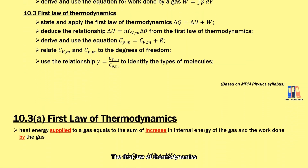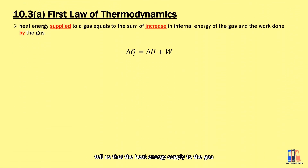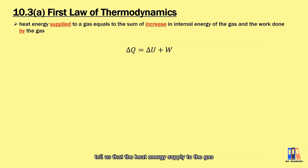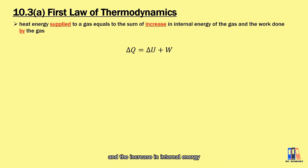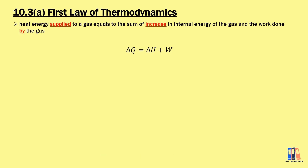The first law of thermodynamics tells us that the heat energy supplied to a gas will be converted to the work done by the gas to expand and the increase in internal energy. The equation is given as delta Q equal to delta U plus W.